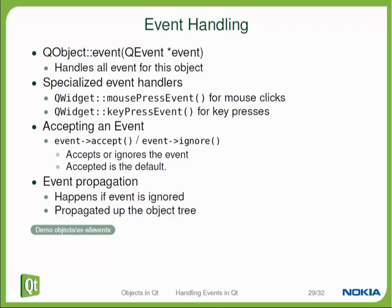The function is called with a parameter that tells you, for example, which key was pressed or where the mouse was clicked. If your class doesn't reimplement that event handler function — because it's a virtual function — the implementation of your base class will be called. So unless you overload the mouse press event in your QWidget subclass, the mouse press event handler of QWidget will be called, and that usually does nothing.